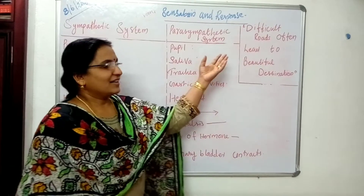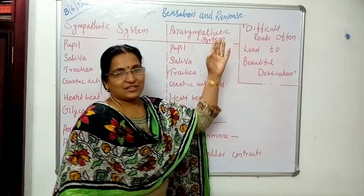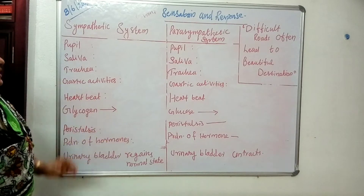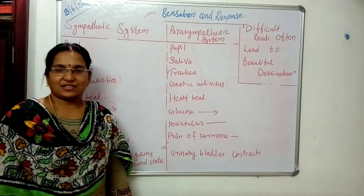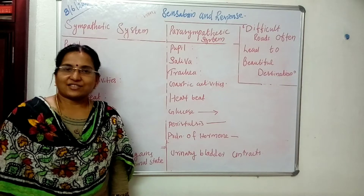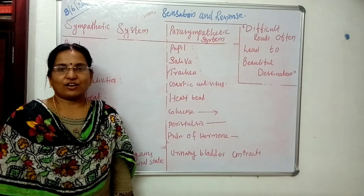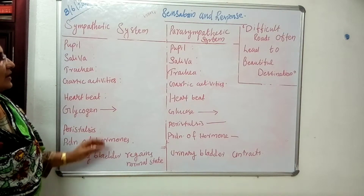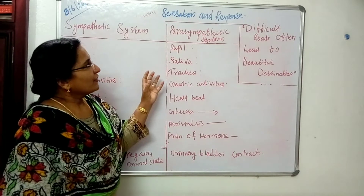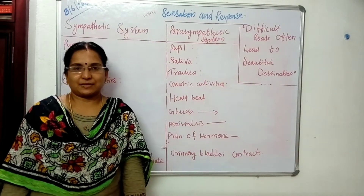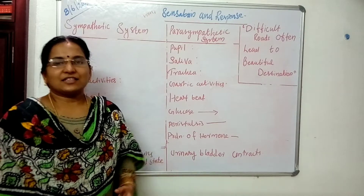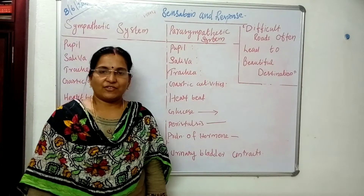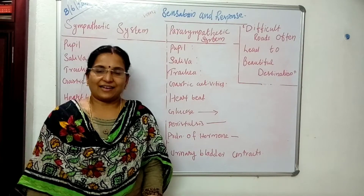Coming back to the topic: in previous classes we have studied the structure of the brain and the function of each part of the brain, reflex action, etc. Today I wish to talk about the autonomous nervous system. In certain instances in our day-to-day life, we all have sudden sadness, sudden fear, anxiety, etc.